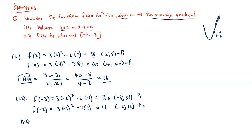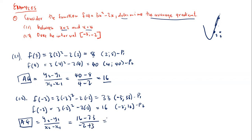Now we determine the average gradient: (y2 − y1) / (x2 − x1) = (16 − 33) / (−2 − (−3)) = −17 / 1 = −17. The average gradient for part 1.2 is negative 17 — a negative gradient, a negative slope. That's how we apply the basics we have discussed.